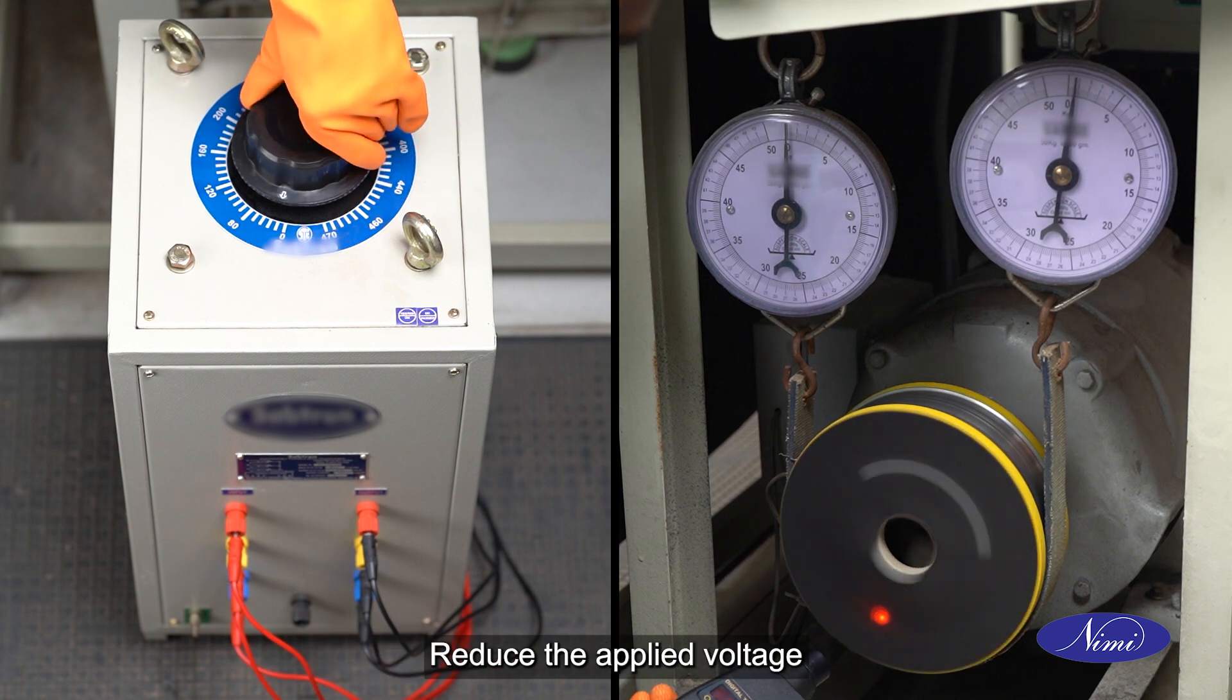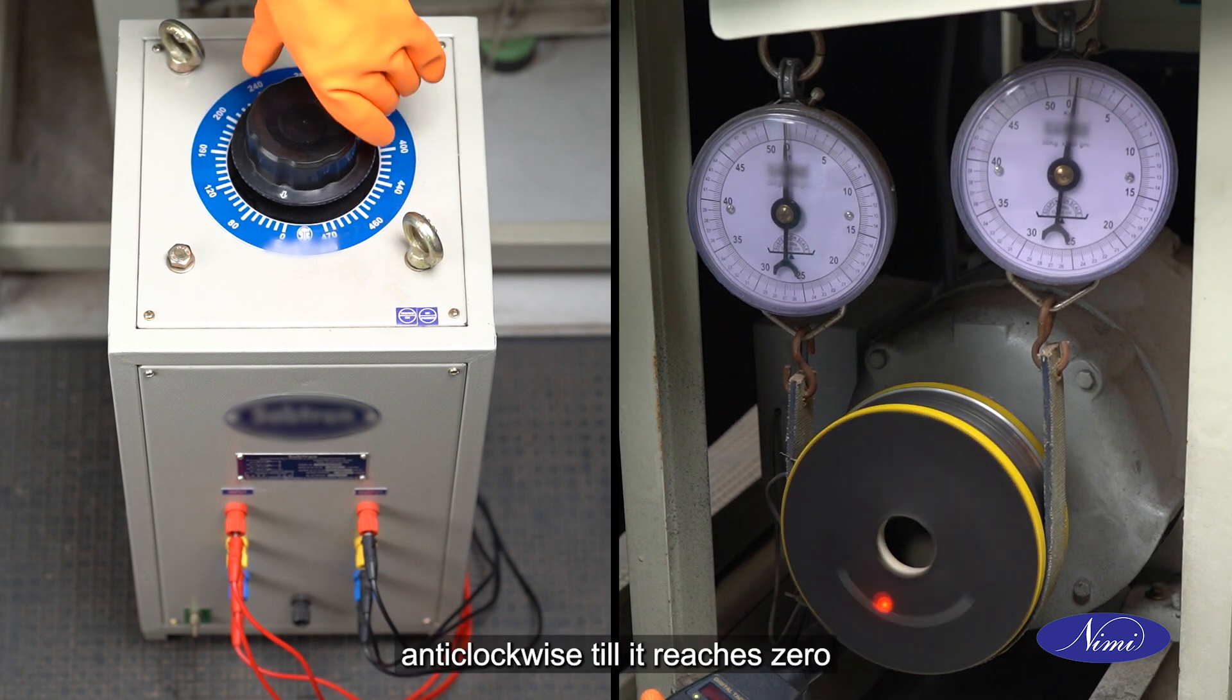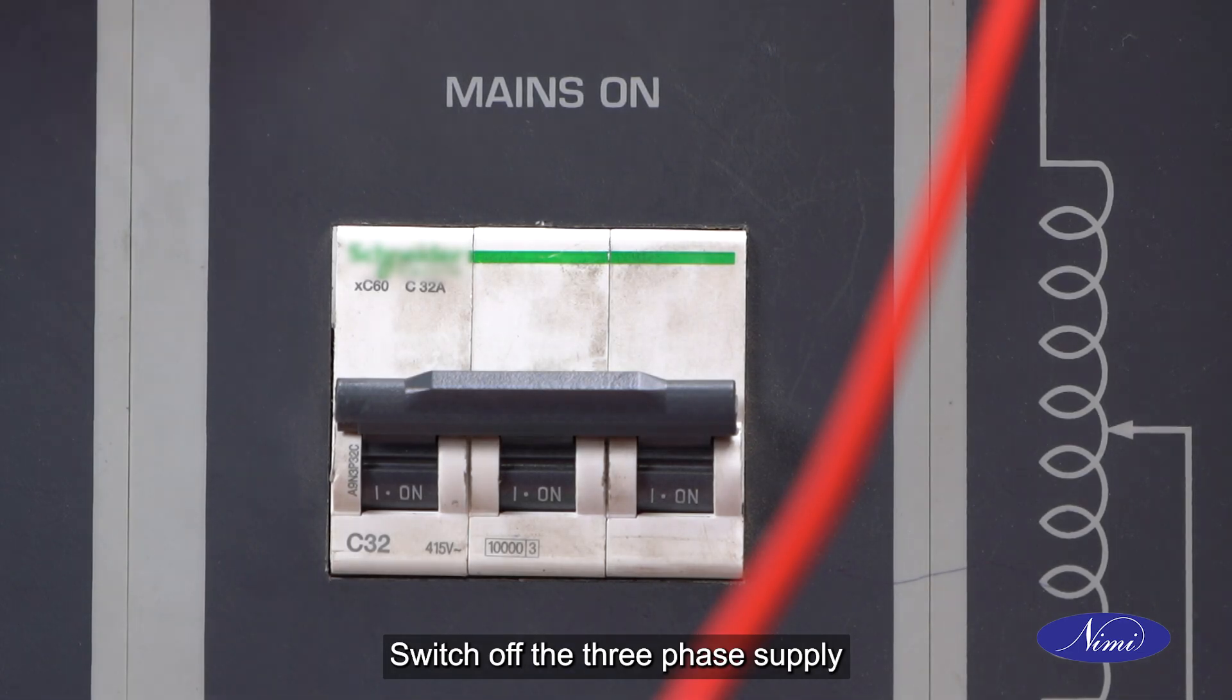Reduce the applied voltage by turning the auto transformer anticlockwise till it reaches zero. Switch off the 3-phase supply.